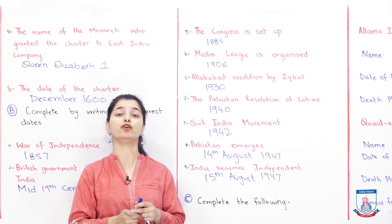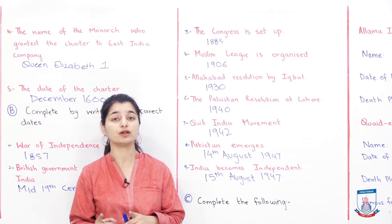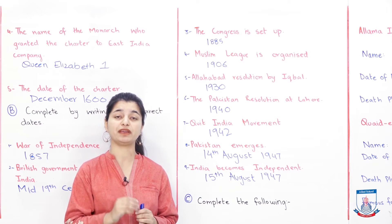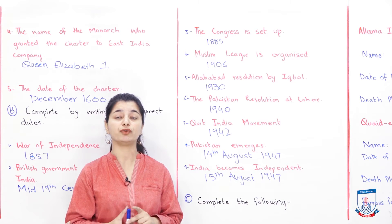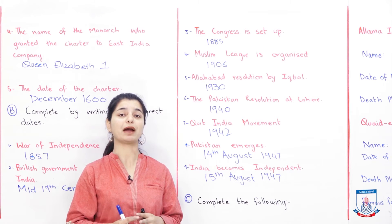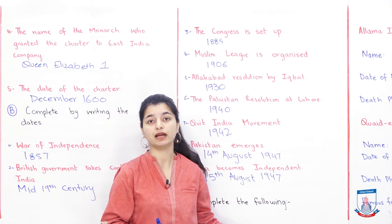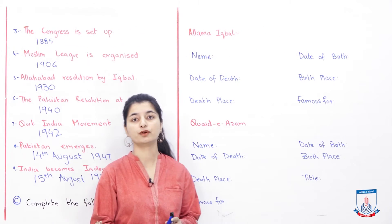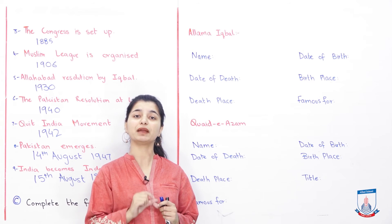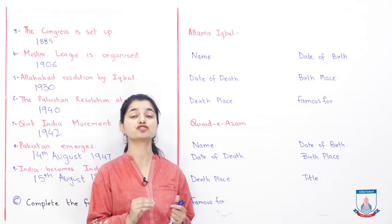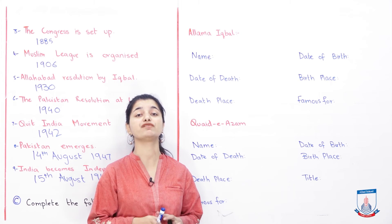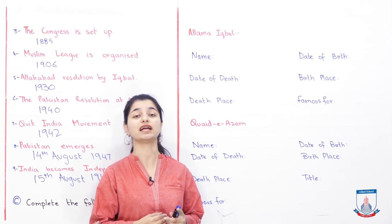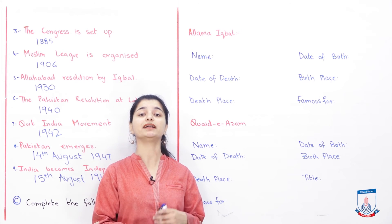After you have written all these dates, I hope you understand and remember which dates occurred. With that, our Part B, Section B, is finished. Now let's look at Section C. Part C says complete the following — we have to go and see what needs to be completed. They have given you two tables: one about Allama Iqbal and one about Quaid-e-Azam. You have to fill them in properly based on your knowledge from this chapter.